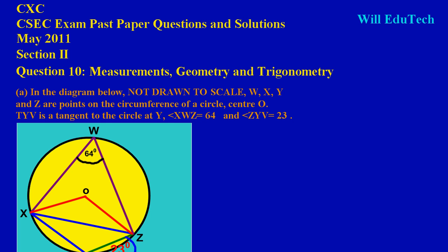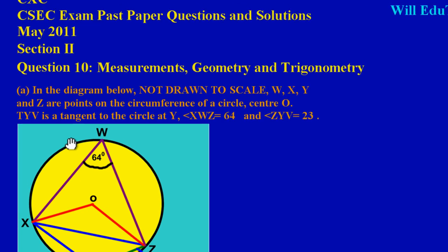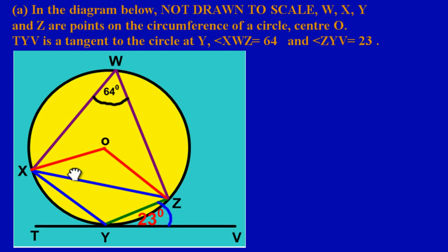Welcome back to another edition of our CSEC exam past paper questions and solutions. We are on section 2, question 10: measurements and geometry — trigonometry. Here we have a question on circle theorems to answer in section 2. In this video we're going to be answering part 1 and part 2, and we'll do another video on part 3, so be advised to watch the following video in the playlist.